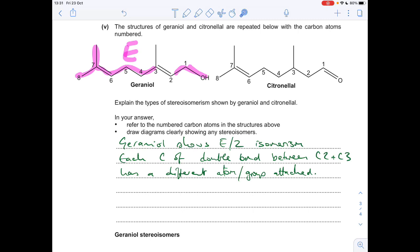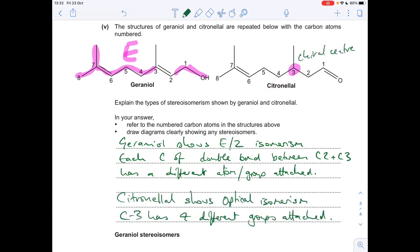Moving on to citronellal now, this shows optical isomerism because carbon-3 has four different groups attached. So we've got a methyl group, a hydrogen that's obviously not shown in the skeletal formula. We've got a CH2CHO group, and we've got this big R group. And for the diagram, I'm just going to show this is an R group. That's perfectly fine to do that. So you can see I've said citronellal shows optical isomerism. C3 has four different groups attached. So that carbon there is a chiral centre.